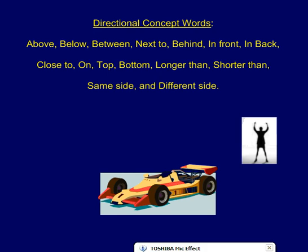As a part of math in kindergarten, we learned 15 directional concept words. You can see these words listed on the page in front of you. Today, we're going to practice using them by moving this character, Mrs. Origin, around the car in front of you.